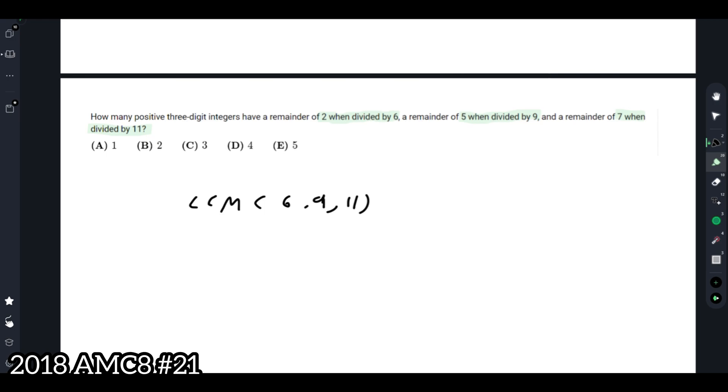If we take an example, say 18 has a remainder of 7 when divided by 11. We can also find this by taking 22 minus 4, which is also 18. So that shows that this method works. How do we find the least common multiple of 6, 9, and 11? We can take the prime factorization.